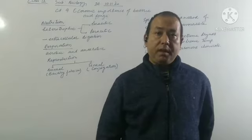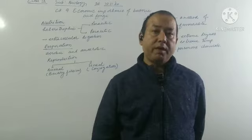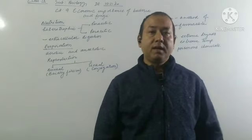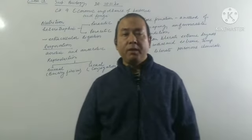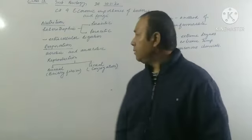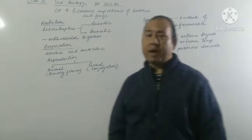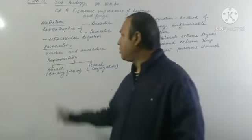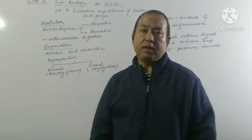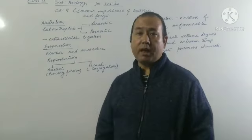There are mainly two types of respiration. You might have learned in junior classes also: aerobic and anaerobic. Bacteria shows both the type of respiration. Bacteria can respire in the presence of oxygen and there are some bacteria which can respire in the absence of oxygen. Aerobes and anaerobes. Those bacteria which respire in the presence of oxygen are called aerobes, and those which respire in the absence of oxygen are called anaerobes.